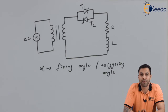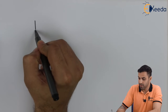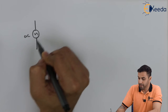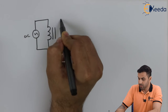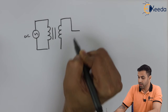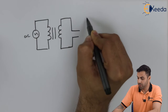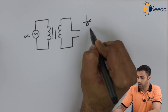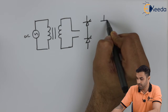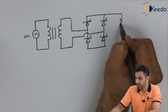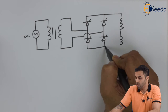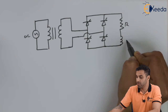Now let's draw a full wave AC voltage controller circuit for an RL load. Let's say this is an AC supply. I'm connecting it to the primary of a transformer, and the secondary of the transformer is connected to four thyristors, as drawn in the earlier circuit, and I'm connecting a resistive and an inductive load across it — R for the resistor and L for the inductor.